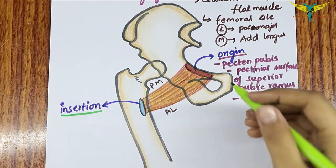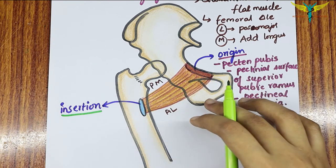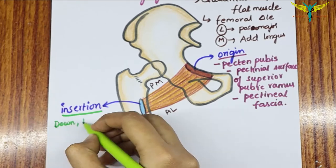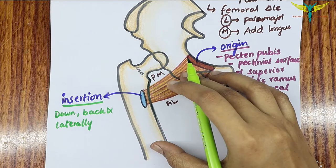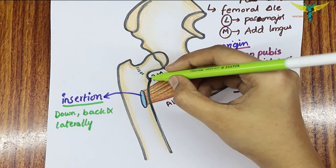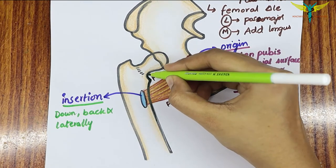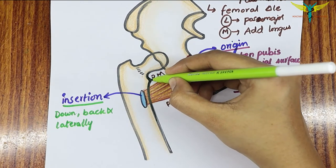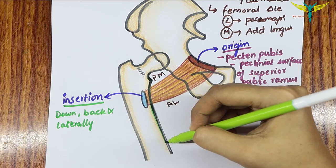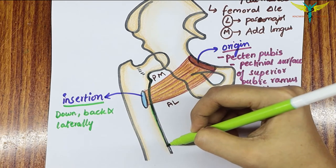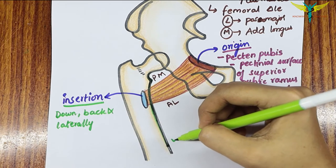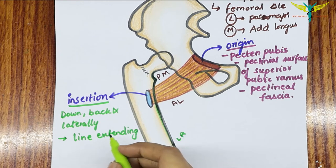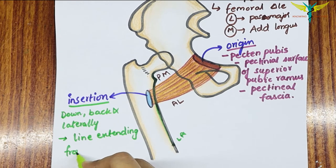The muscle slopes downwards, backwards, and laterally. It is inserted along a line that extends from the lesser trochanter of the femur up to the upper end of the linea aspera.